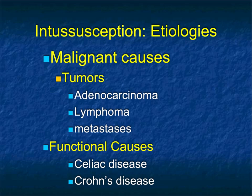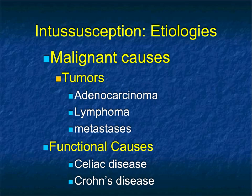Last time I mentioned intussusceptions. We spoke about one of the causes — the third most common cause of small bowel obstruction — which is tumors. It can be malignant tumors or benign. Intussusception in general often involves malignant tumors, but more commonly in adults, benign tumors in the small bowel. Malignant causes range from adenocarcinoma to lymphoma to metastasis.